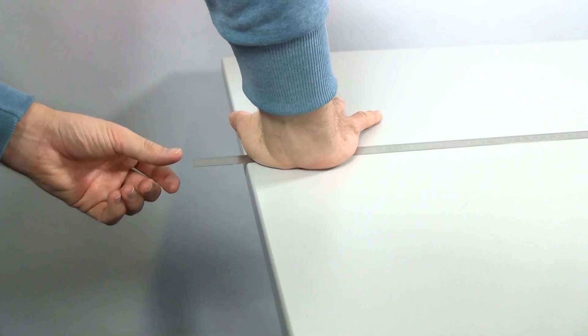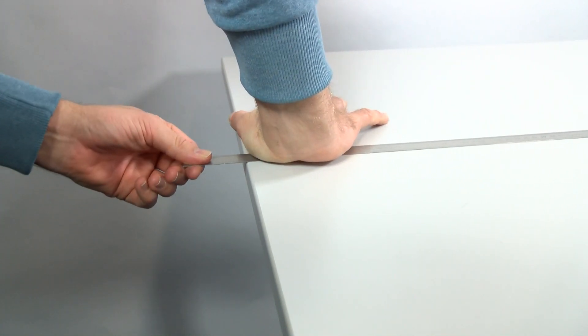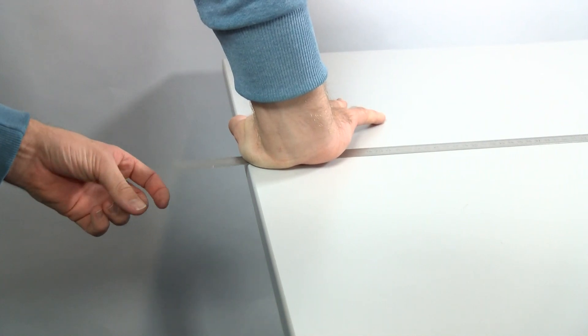Hi everyone! In this experiment you should use a ruler to create different high sounds. It is important that there is nothing on the table apart from the ruler.